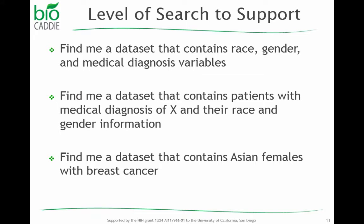For example, when we conducted the dataset search use case analysis, what some of the healthcare research papers indicate is that researchers would search the dataset using demographic details about the patient and a few other critical details. For example, researchers would go to the data map and search for something like: find me a dataset that contains Asian females with breast cancer. But right now, what we can do is find a dataset that maybe contains patients with breast cancer and that contains gender and race information — that's all. So the key challenge becomes how to expose this more detailed data content to the surface as searchable metadata.